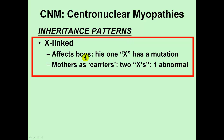Boys inherit the X chromosome from their mom and the Y chromosome from their dad. Therefore, out of the two X chromosomes that the mother had, if one was normal and one was abnormal, there is a 50% chance for each of her sons as to whether he will inherit her abnormal X chromosome or her normal X chromosome. If he inherits the abnormal X chromosome, he will be affected by the X-linked condition.